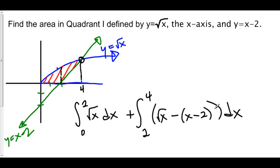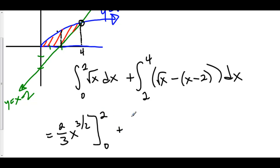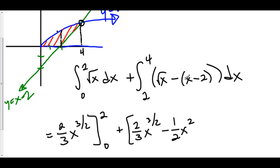So here's the setup for the integrals for the area beneath this curve. The antiderivative of x to the 1/2 is x to the 3/2 over (3/2), which is 2/3 x to the 3/2, evaluated from 0 to 2. Plus, the antiderivative of x to the 1/2 is 2/3 x to the 3/2, the antiderivative of negative x is negative 1/2 x squared, and the antiderivative of positive 2 is positive 2x, evaluated from 2 to 4.